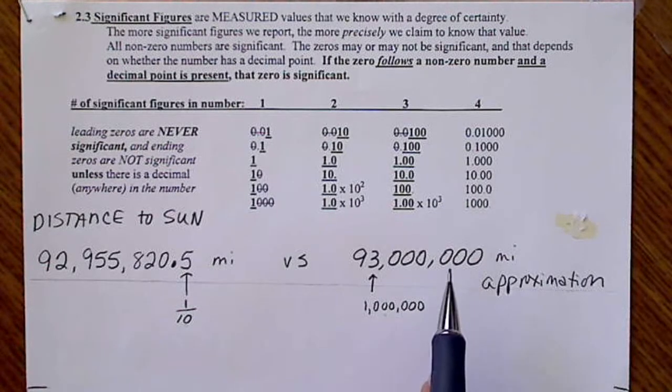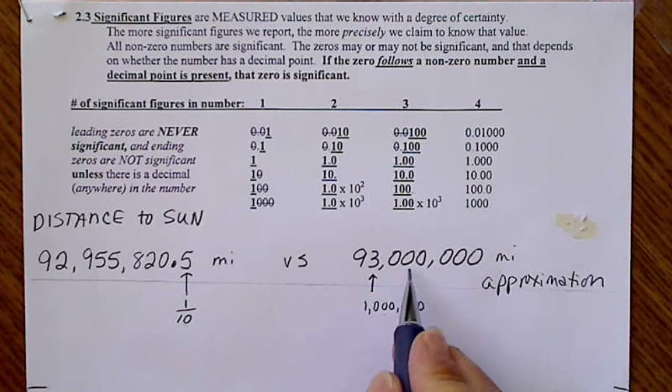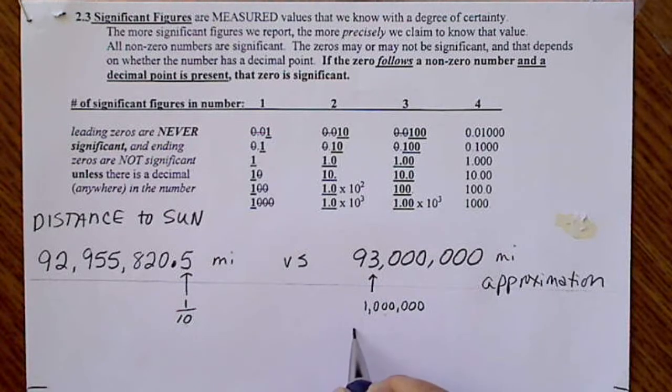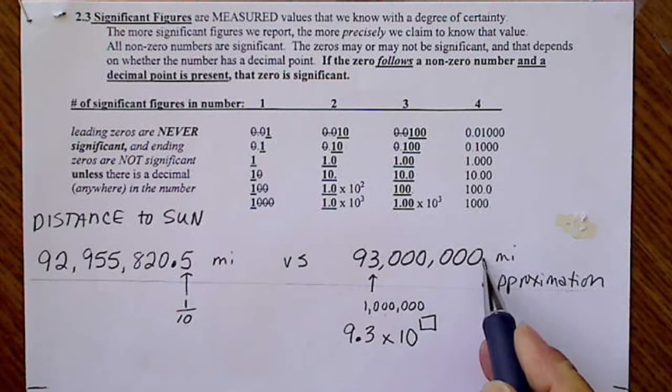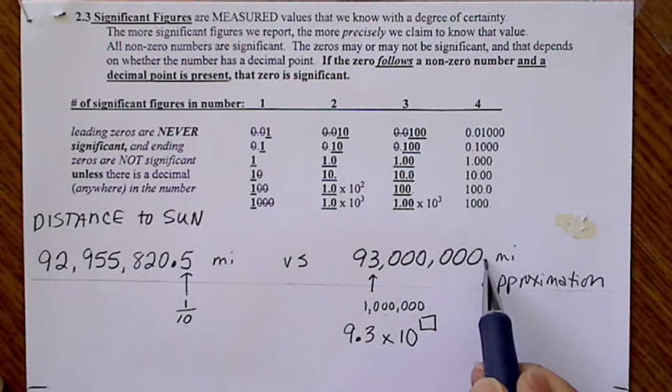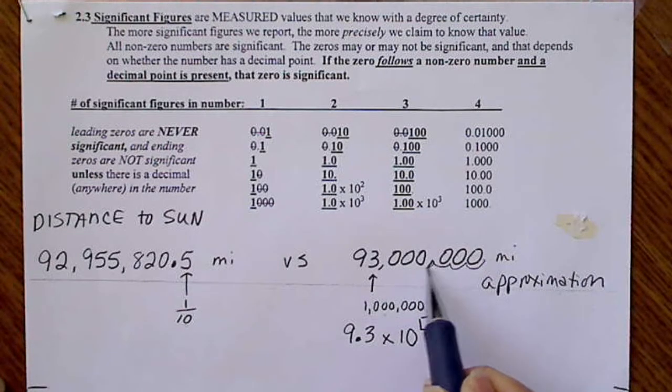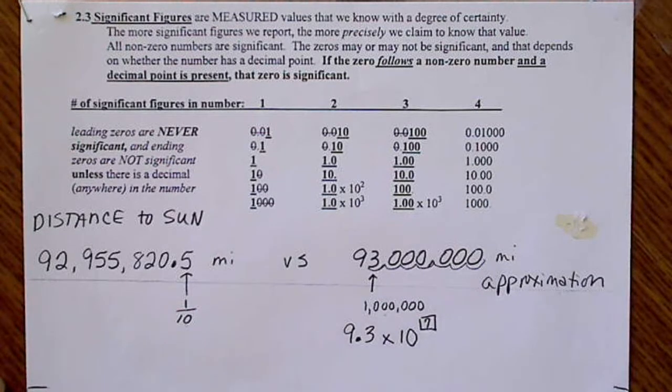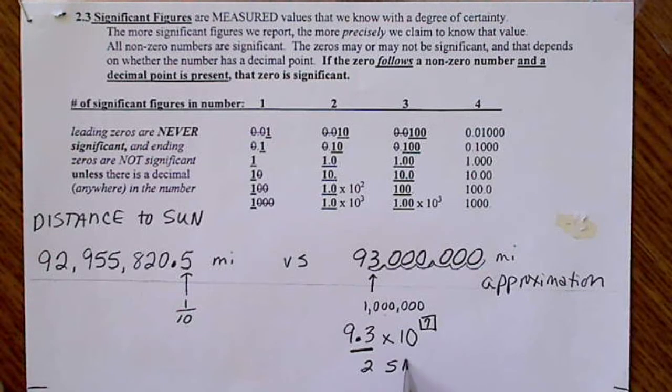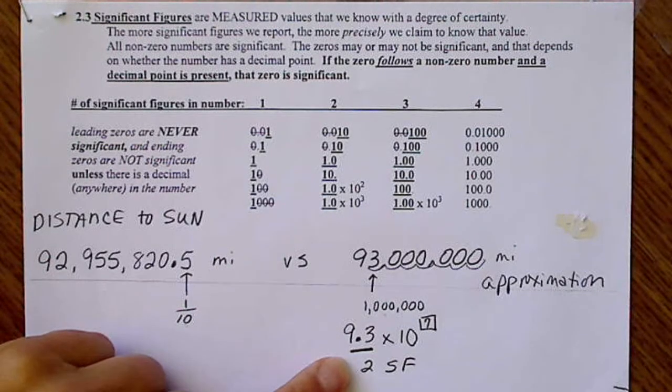If we write this number in scientific notation, we will not include those zeros. We would simply write 9.3 times 10 to the something, and this is a big number, so we know the power is going to be positive. We simply move the decimal over seven places, and so we write that as 9.3 times 10 to the seventh. The two significant figures that this number has will show up when we write it in scientific notation.